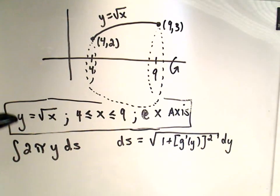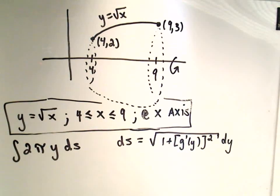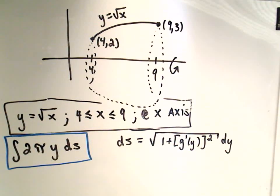So again, we said we were rotating y equals square root of x, the x-coordinates between 4 and 9, about the x-axis. So again, the surface area formula that we have to use is this 2 pi y ds formula. Again, we have no choice about that. We do have a choice about the ds formula, so now I'm going to use the opposite one, the 1 plus g prime of y quantity squared dy.